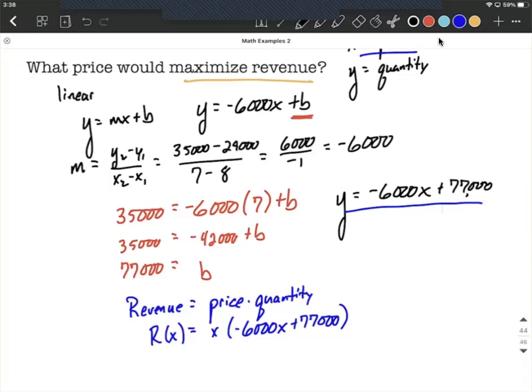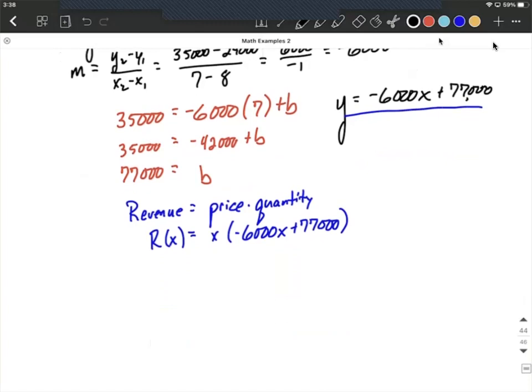To optimize this and maximize our revenue, before we find the first derivative, I'd rather not use the product rule. So I'm going to multiply this out so we can just use the power rule. Distributing that x on the outside, we're going to get negative 6,000 x squared plus 77,000 x.